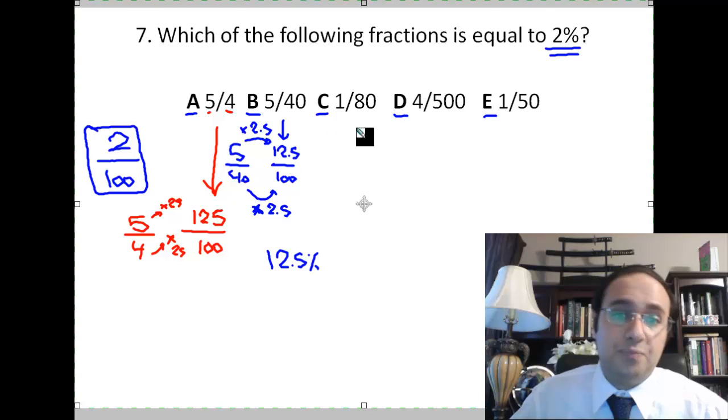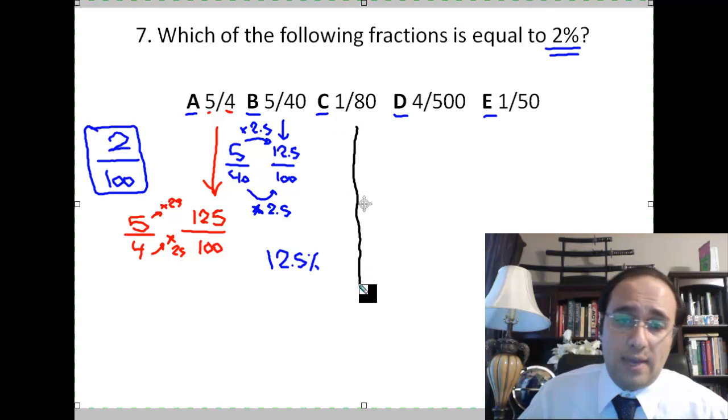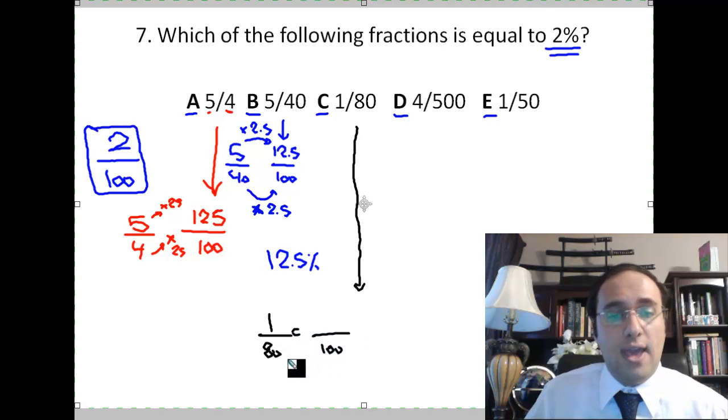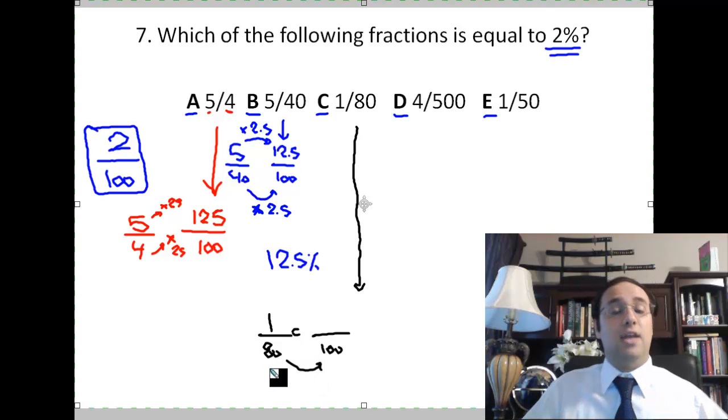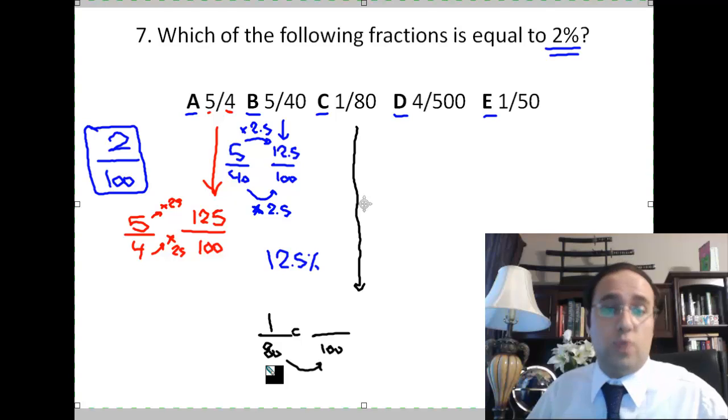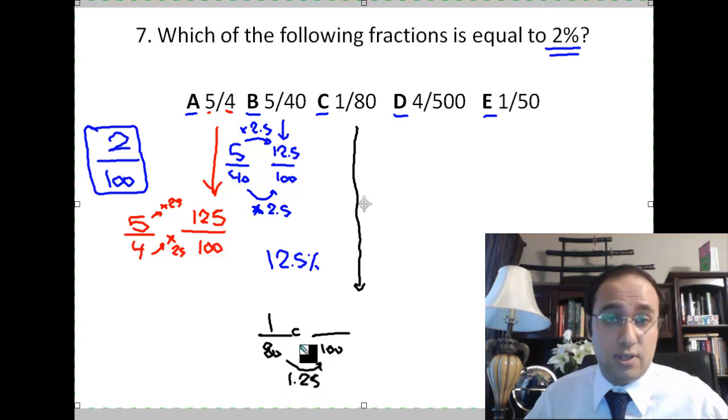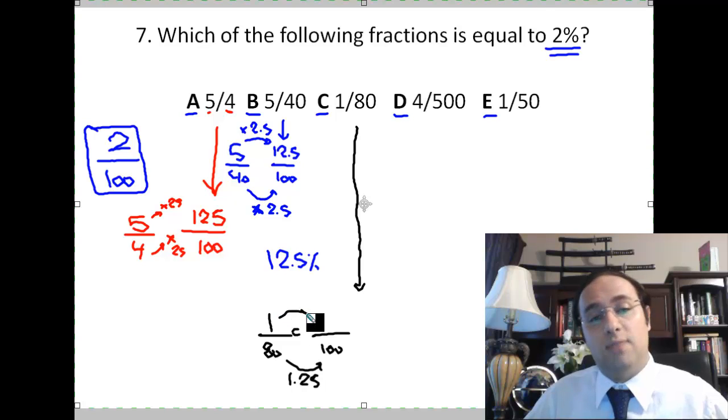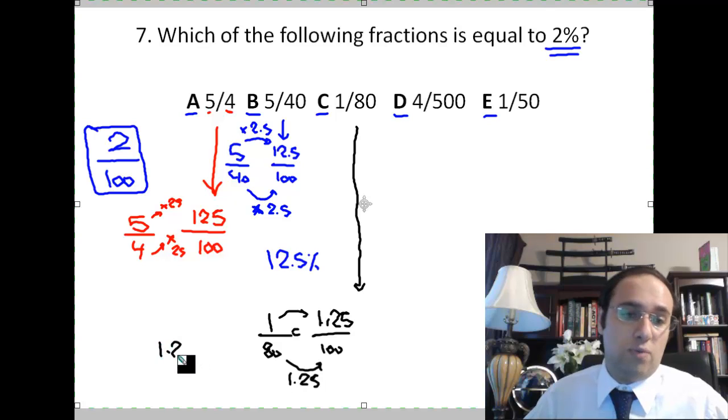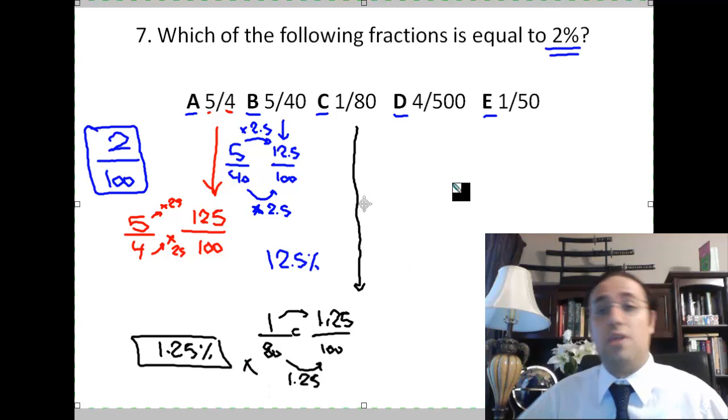Let's take a look at C. 1 over 80. I want 1 over 80 to be equal to something over 100. 80 times what equals 100? 80 times 1 is 80. And then I need a quarter of 80, which is 20, so it will become 100. So I multiply by 1.25. We explained in previous lessons how to do this without a calculator. So 1 times 1.25, I get 1.25. So the answer is 1.25 percent. Again, not 2 percent.